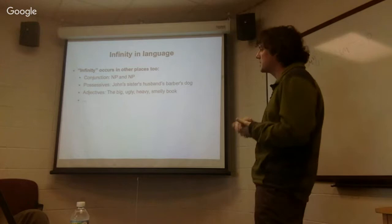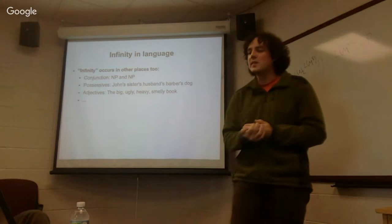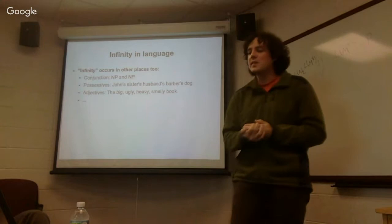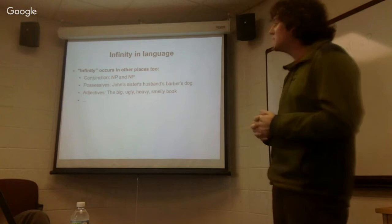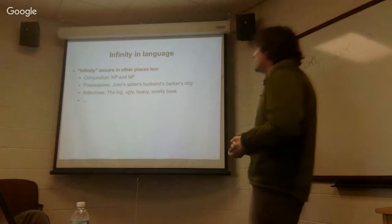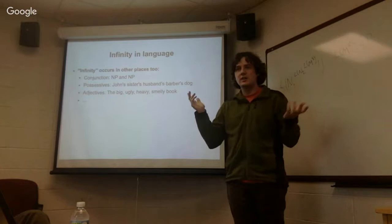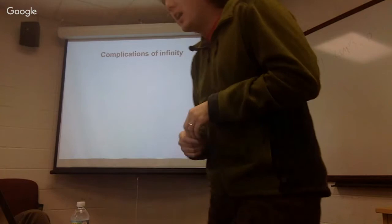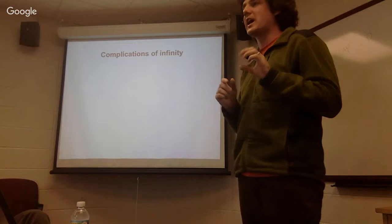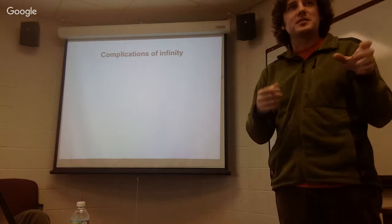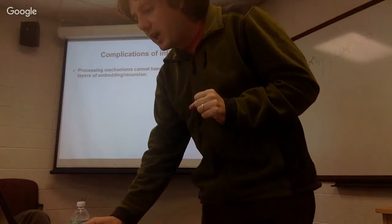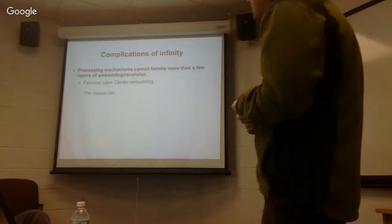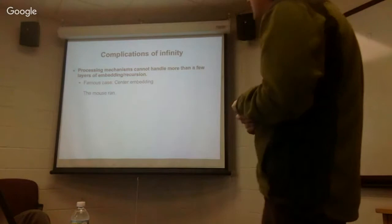In English, it's not just that one construction. There's lots of places where this seems to occur. Conjunction: I can say 'Bill and Tom were happy,' then 'Bill and Tom and Cindy were happy,' and keep going. I can nest possessives: 'John's sister's husband's barber's dog.' I can have sequences of adjectives. Of course, at some point things get really hard to process — if you remember the last line of 'The House That Jack Built,' that's really hard to follow. It's well known that processing mechanisms can't handle more than a few layers of embedding or recursion like this.